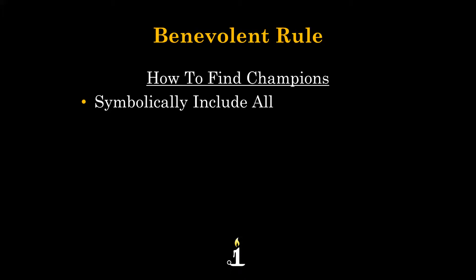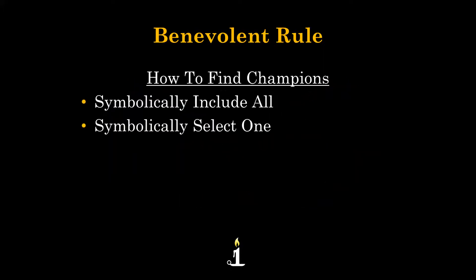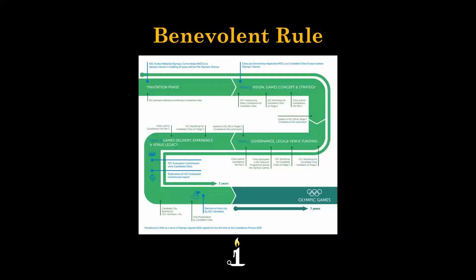Look at what the Olympics have become — we're trying really hard to make the Olympics what is displayed in this very simple symbol. So once you include everyone symbolically, then you must symbolically select one. We see this in the detailed process that the Olympics goes through for selecting a location.